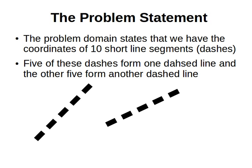Welcome back. Now we start presenting the problem that we will solve using microbial genetic algorithms. The problem says that we have the coordinates of 10 short line segments or dashes. Five of these dashes form one dashed line, the other five form another dashed line.